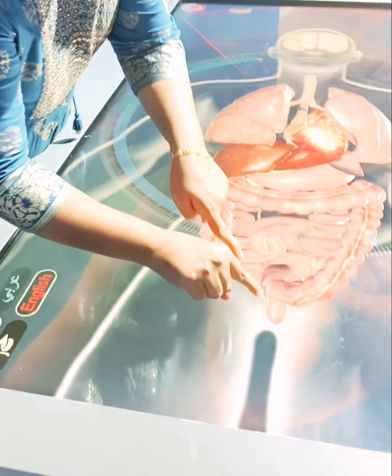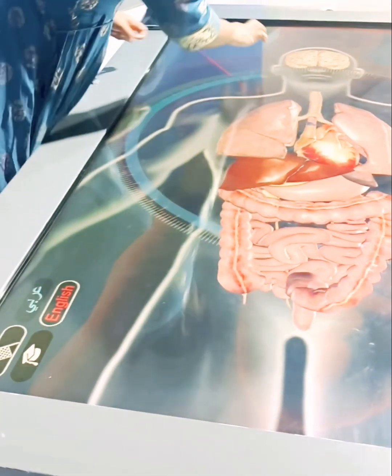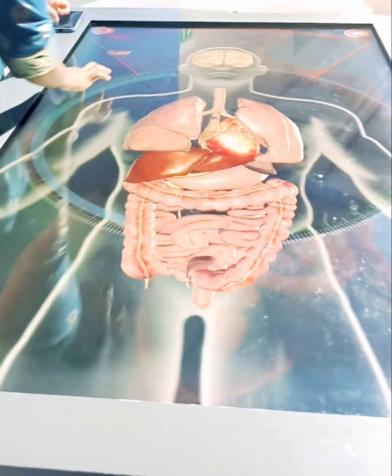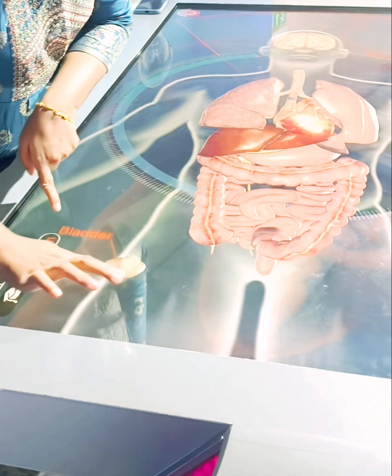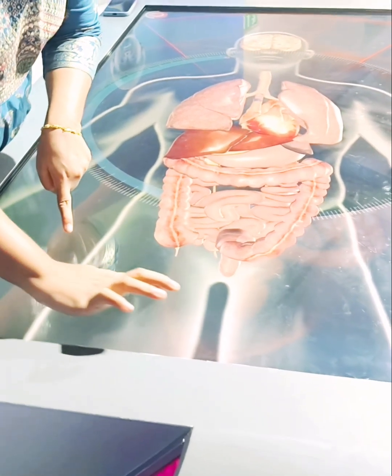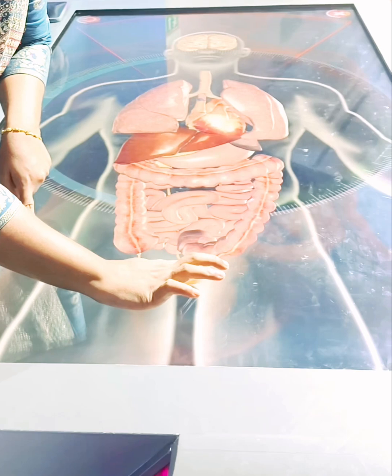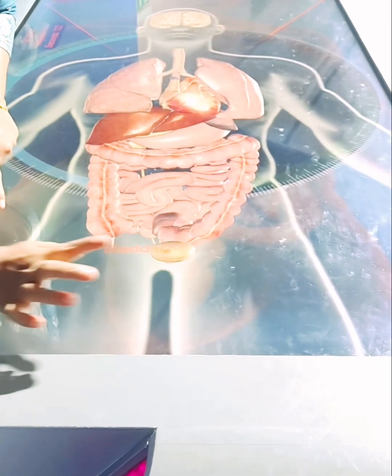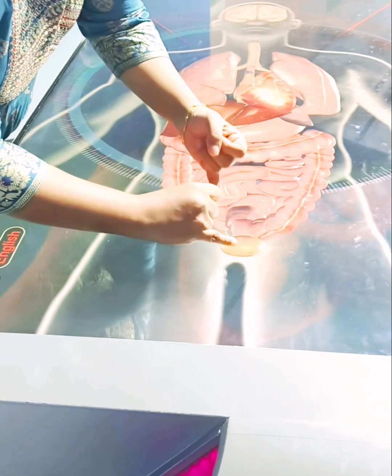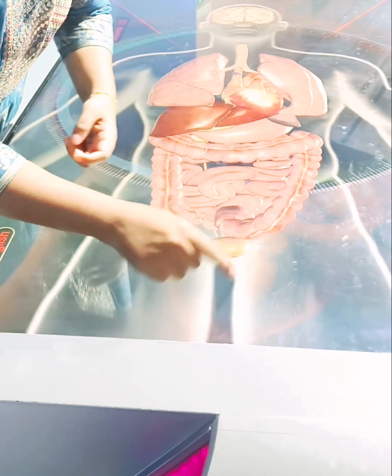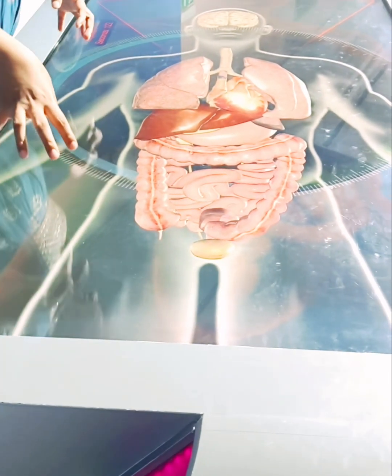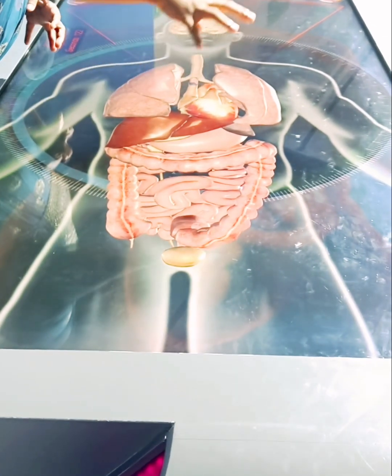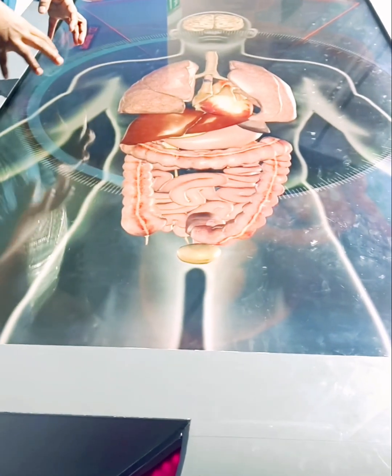Then these two tube-like structures are called ureters. So these tubes carry the urine from the kidney to the bladder. Then we have the urinary bladder. So the urinary bladder is a hollow spherical-shaped organ and it holds the urine. During the process of urination, the muscles in the bladder contract, that is it tightens, and the sphincter muscle in the urethra relaxes and then it allows the urine to flow out of the body.